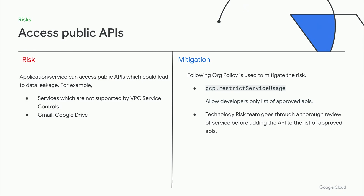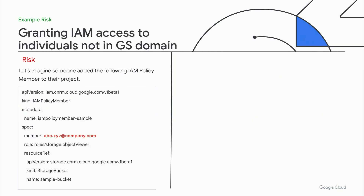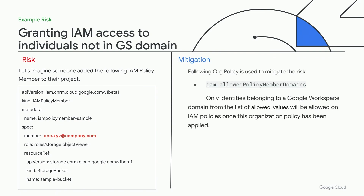Finally, we have the risk of granting access to individuals not in the Goldman Sachs domain. For example, if someone added a member from an external domain such as company.com, that's not part of the GS domain, this could lead to data exposure outside of GS. To mitigate this, we use the IAM.allowedPolicyMemberDomains org policy, which only allows identities from the allowed list of domains.